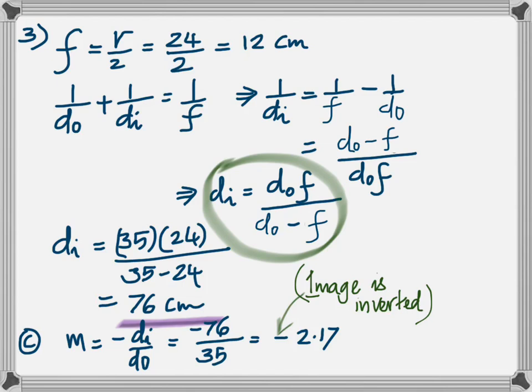And then to find the magnification, use the formula, m is equal to minus dI by dO, you get negative 2.17. Because the magnification is negative, we know that the image is inverted, and it is real, because magnification is negative only for a real image.